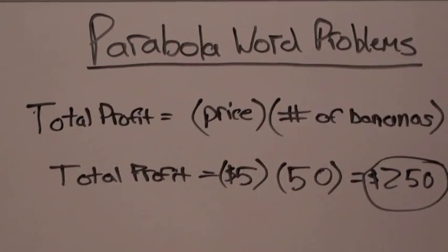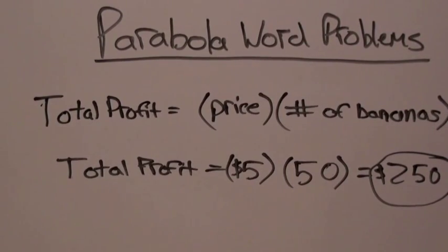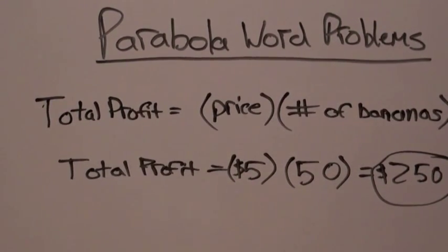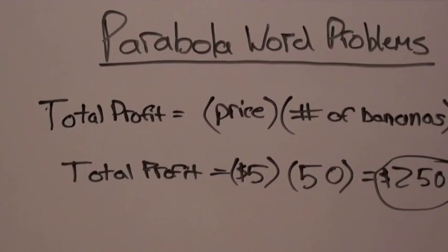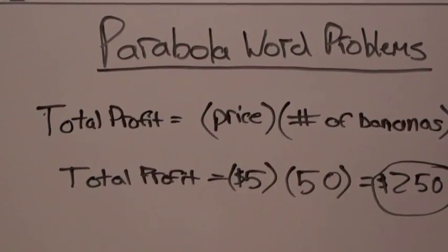Before we find out if Ethan is maximizing his profit, we first need to find out what his total profit is. In order to do so, we need to use the formula: total profit equals price times number of bananas sold.